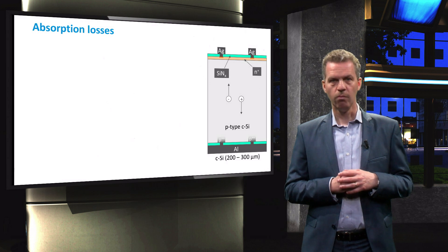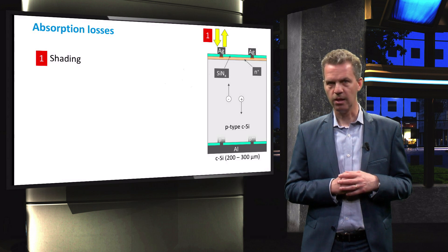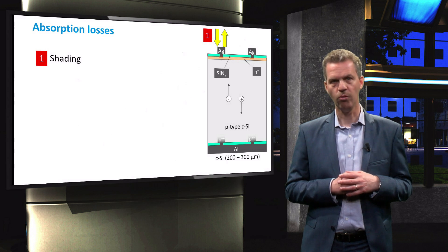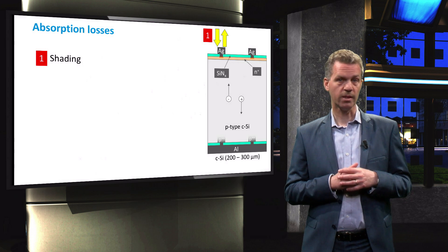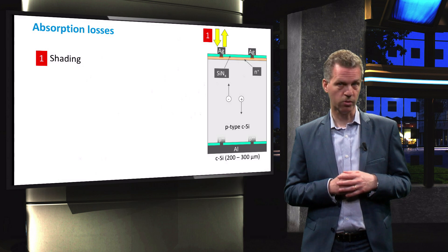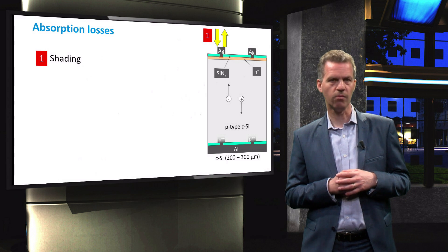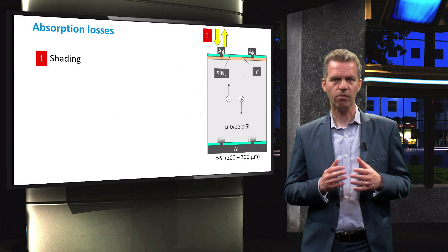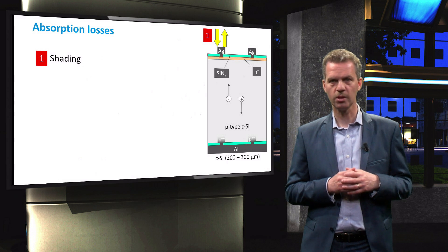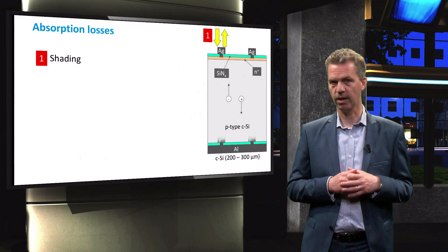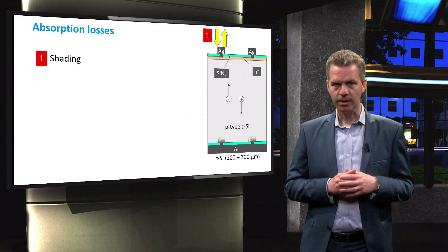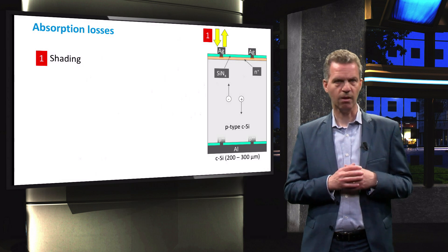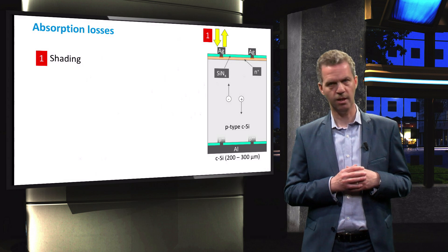First of all, we will lose a fraction of the incident light by reflection on the front metallization. This front metallization is obviously required to collect the photogenerated current and we have seen in the video on the fill factor that the coverage by the metal grid is used in the optimization of this fill factor. However, these metal fingers and bus paths will simply shade a fraction of the total cell area.